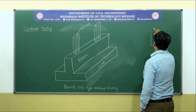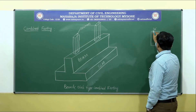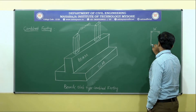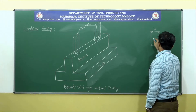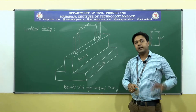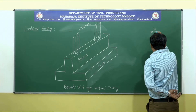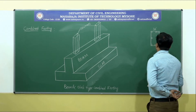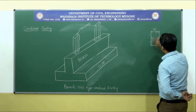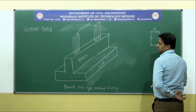Let me consider a 30 feet by 40 feet site. As you people know, we need to provide columns at suitable positions based on the design. Let me assume I have provided columns at certain positions. Now, from an aesthetical point of view or due to some planning, I need to provide one column very close to another column.